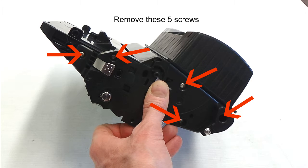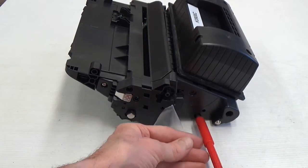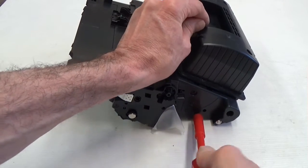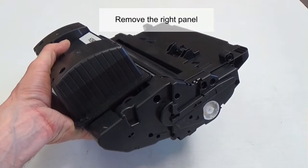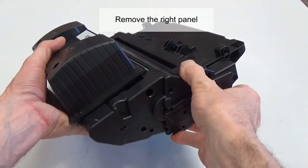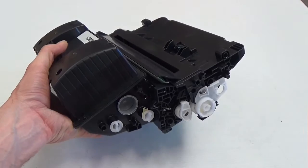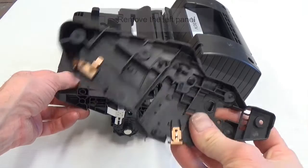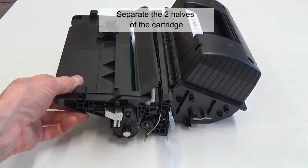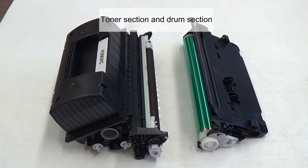Remove these five screws. Remove the right panel. Remove the left panel. Separate the two halves of the cartridge: toner section and drum section.